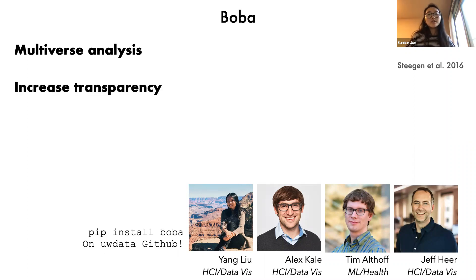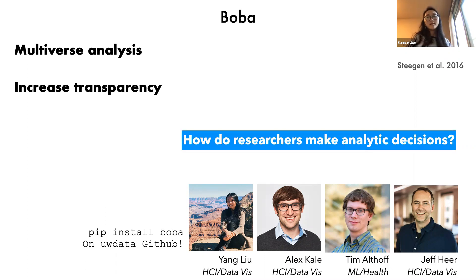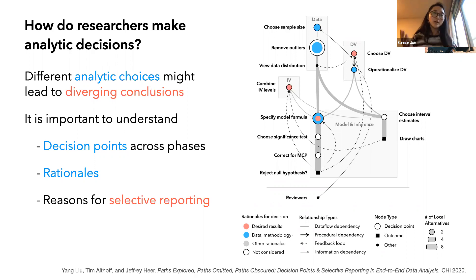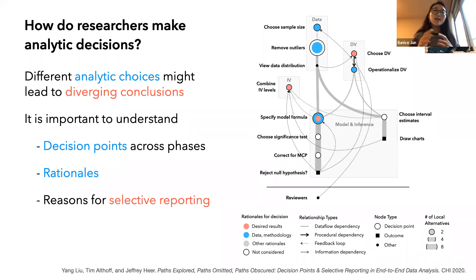The statistical analysis process is often more involved than selecting an appropriate test — data analysts must make a multitude of decisions: do we exclude this data, how do we bin this data, which model do we choose? If we consider each analysis TEA supports to be a universe, then a data analyst actually explores a multiverse of analyses. Multiverse analyses can help increase the transparency of data analyses by communicating all the possible choices a data analyst has explored. To understand how researchers make analytic decisions, Yang conducted semi-structured interviews with nine authors of published research studies and developed an analytic decision graph that captures the range of decisions and backtracks an analyst must go through before finalizing their analysis.